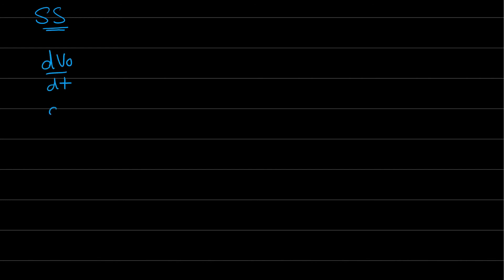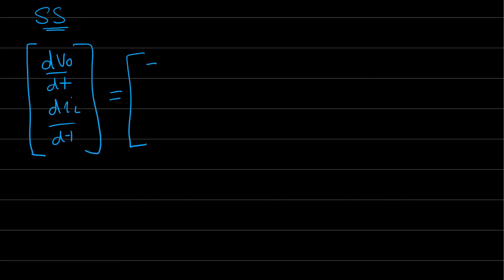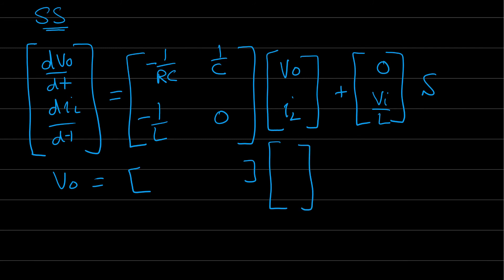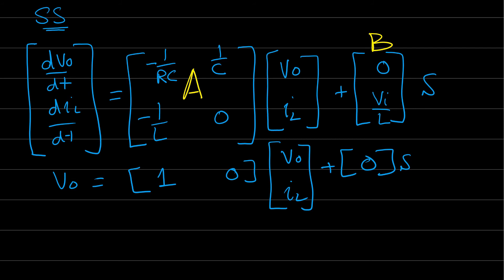Summarizing in state space form: the state derivative vector [dV_out/dt, di_L/dt] equals the A matrix [-1/RC, 1/C; -1/L, 0] times the state vector [V_out, I_L], plus the B matrix [0; V_in/L] times the switch input. The output equation V_out = C·[1, 0]·[V_out, I_L] + D·input, where D = 0.